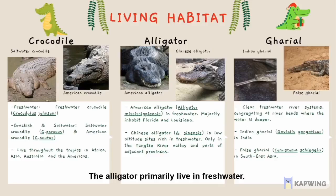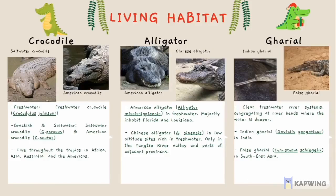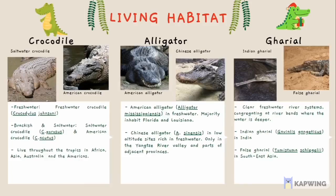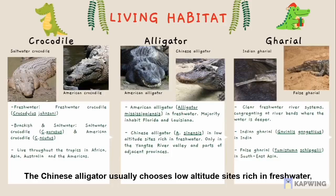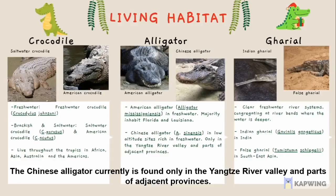Alligators primarily live in freshwater. The two extant species are the American alligator and the Chinese alligator. The American alligator lives in freshwater environments such as swamps, marshes, wetlands, rivers and lakes, with the majority inhabiting Florida and Louisiana. The Chinese alligator usually chooses low-altitude sites rich in freshwater such as marshes, lakes, ponds and streams, and is currently found only in the Yangtze River Valley and parts of Anhui and Zhejiang provinces.